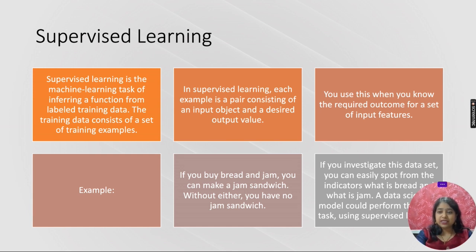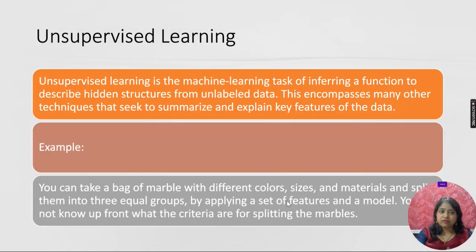If you investigate this data set, you can easily spot from the indicator what is bread and what is jam. The data science model you could perform in this is known as supervised learning.